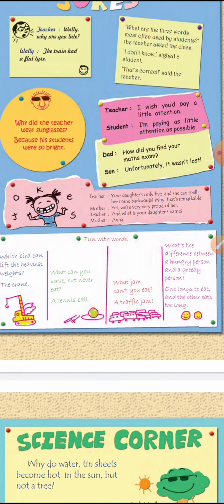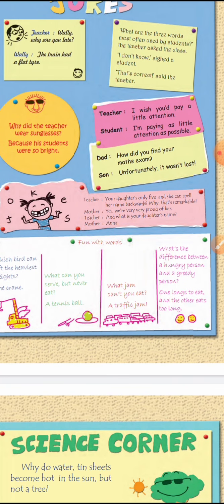Why did the teacher wear sunglasses? Because her students were so bright! Then next joke: Teacher says, 'I wish you would pay a little attention.' The student answers, 'I am paying as little attention as possible' — meaning, I do pay a little attention but still couldn't score marks.